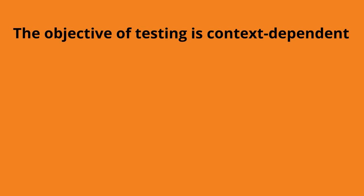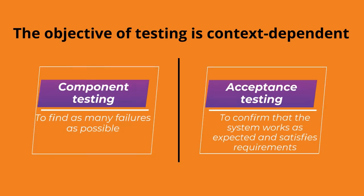Before we end this lecture, let's understand one last point: testing objectives are context-dependent. We discussed general testing objectives, but the objectives vary by context. For example, at the component level, the objective is to find as many defects as possible and increase code coverage so defects are not found during operational use. At the acceptance level, the objective is to check if the system works as expected, satisfies requirements, and to give information to stakeholders about the risk of releasing the system at a given time. In different levels of testing, the objective changes.